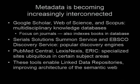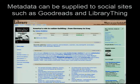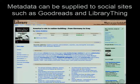Metadata is becoming increasingly interconnected. Google Scholar, Web of Science, Serial Solutions, PubMed Central — they're all using metadata, and together they're linking data repositories to improve the architecture of the semantic web. Publishers can submit metadata directly to Goodreads and Library Thing. They get metadata from other sources too, so your books might already be on there, but if you submit it yourself it's going to be more timely and more accurate.